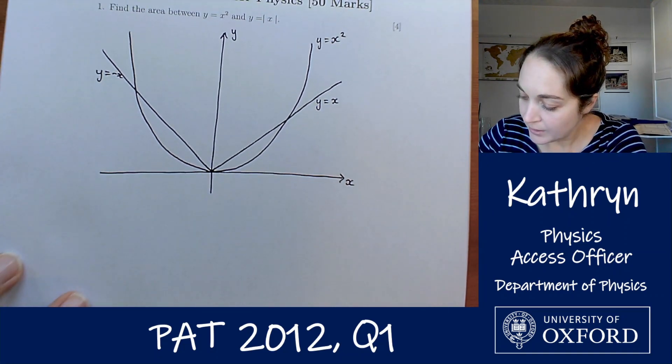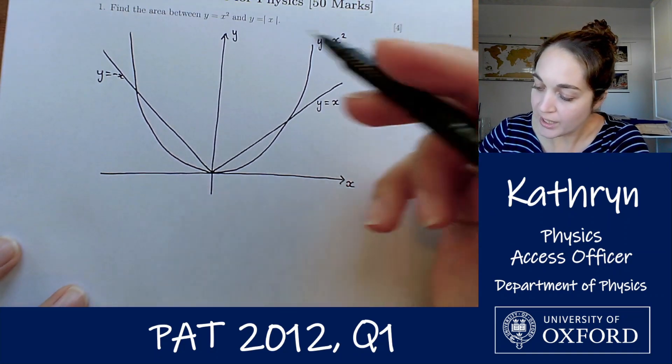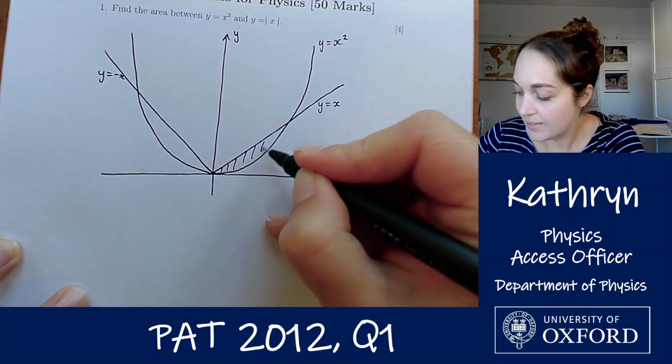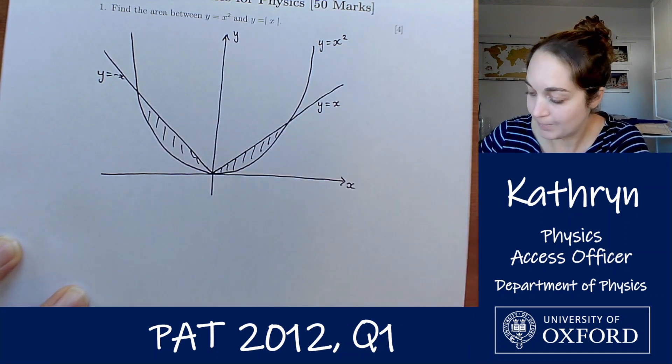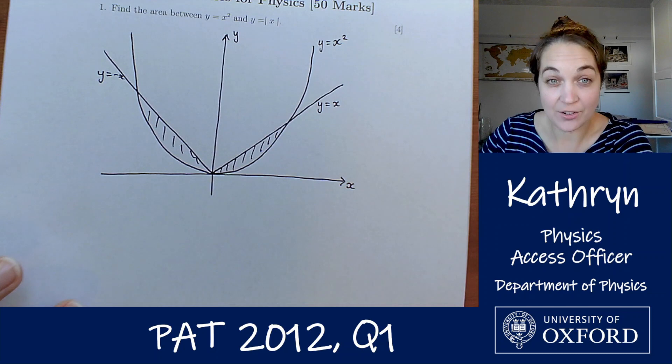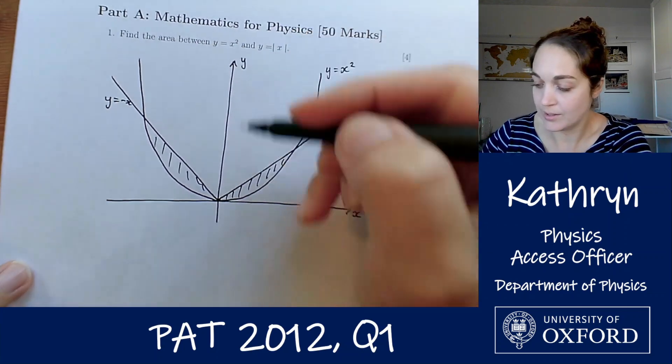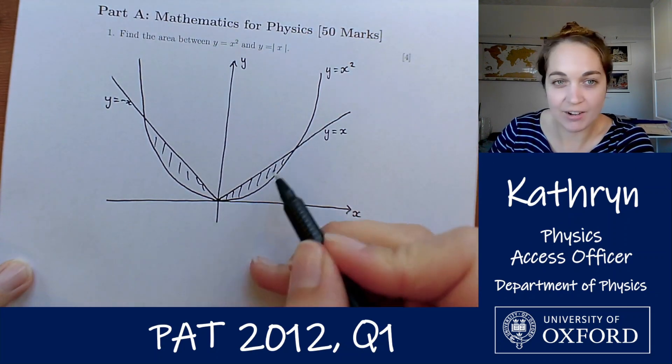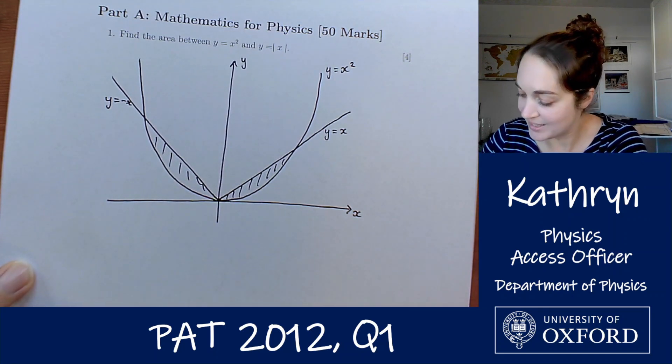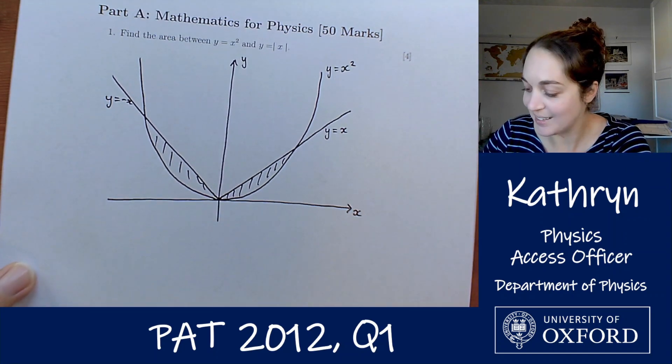Alright, so what we want is the area between y equals x squared and y equals mod x, so that's this section here and this section here. And the whole problem is symmetric about the y axis. So this area here is going to be the same as this area here, even if that's maybe not quite what my sketch seems to be showing, it's certainly what is intended.